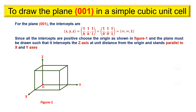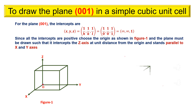For the plane (0 0 1), the intercepts are x, y, z equals infinity, infinity, 1. Since all the intercepts are positive, choose the origin as shown in figure 1. Then draw the plane such that it intercepts the z axis at unit distance from the origin and stands parallel to x and y axes.